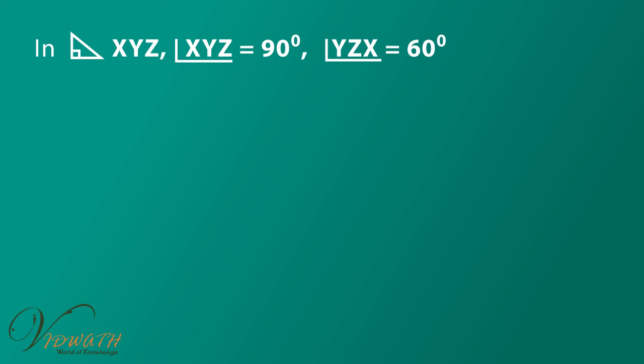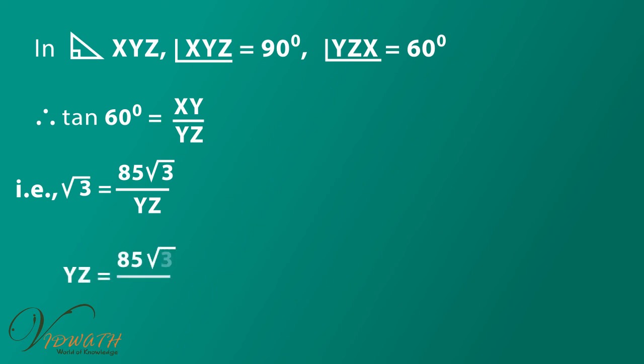Angle YZX is equal to 60 degree. Therefore tan 60 degree is equal to XY by YZ. Then substituting the value and simplify, that is square root of 3 is equal to 85 square root of 3 divided by YZ. By cross multiplication we get YZ is equal to 85 square root of 3 divided by root 3. YZ is equal to 85 meters. Therefore the car is 85 meter away from the building.